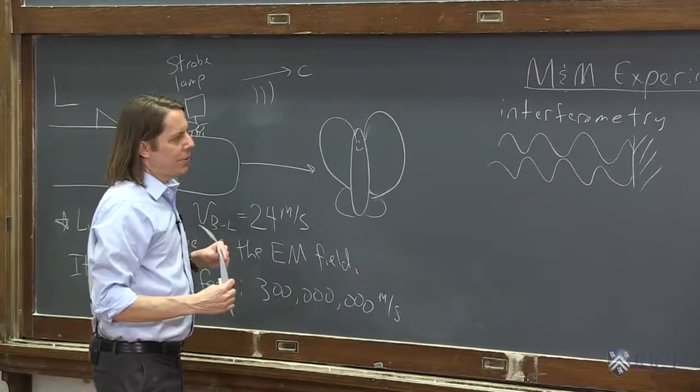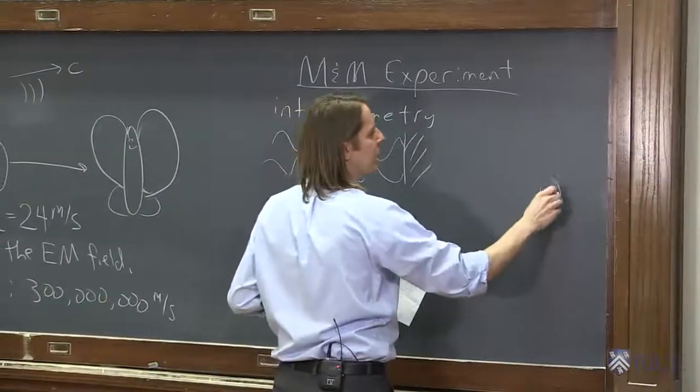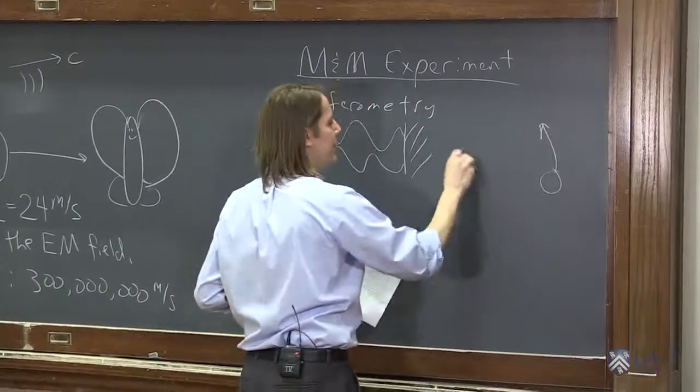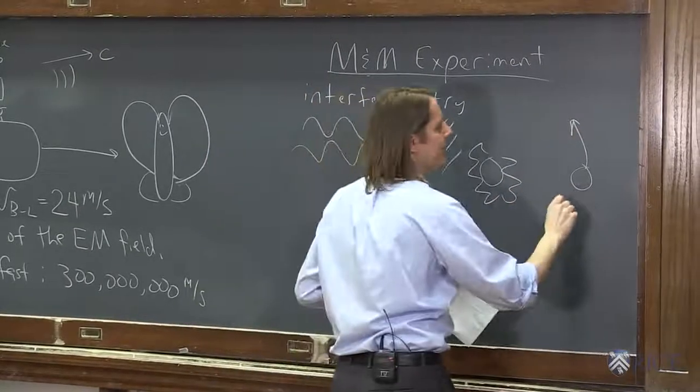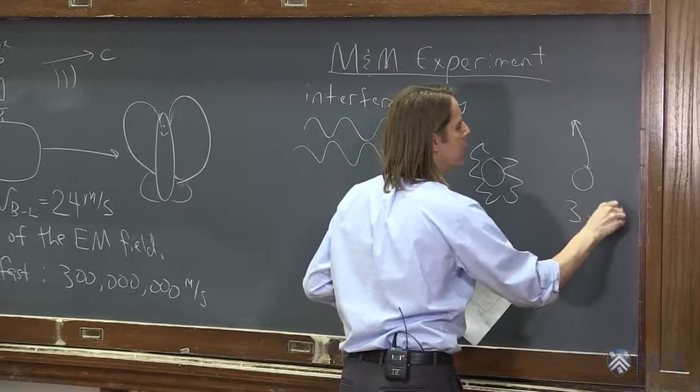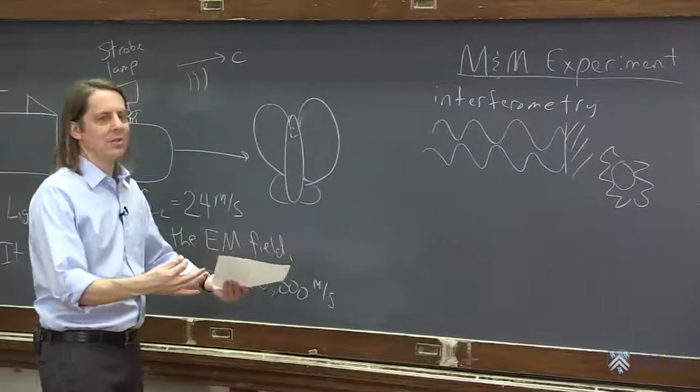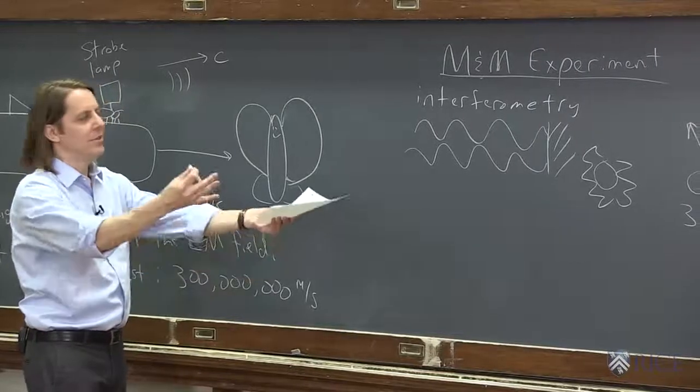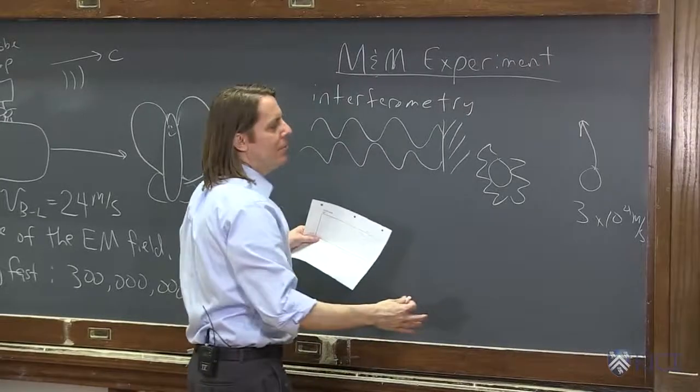So M&M set up an interferometer. And the idea was that we know that the Earth is moving through space pretty fast. So if this is the Sun, the Earth is going at about 3 times 10 to the 4 meters per second. So if you imagine that the luminiferous ether is in space and it's at a constant velocity in space, maybe stationary with respect to the Sun, maybe flowing this way, it doesn't really matter.